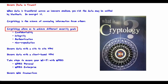Cryptology allows us to achieve different security goals: confidentiality, integrity, authentication, and non-repudiation. Confidentiality means keeping the information secret. Integrity means ensuring that the data has not been altered in transit. Authentication means proving identity. Non-repudiation means a party cannot deny that they sent a specific message.